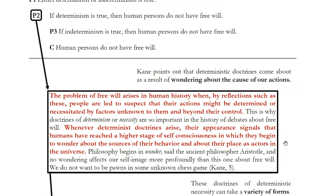A determinist doctrine will always hold that what happened in the past makes it so that what you're going to do next had to occur — it's the idea that past events necessitate the present. And if that's true, then our actions are very much necessitated by factors we had no control over. We have no control over the long chain of causes that brought us to this moment, and it's these sorts of reflections that give rise to determinist doctrines, which ultimately undermine free will.